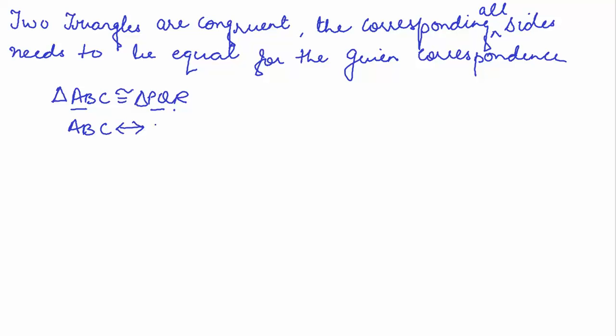And the correspondence is ABC corresponding to PQR. Now one more thing I would like to emphasize here is, when I say that triangle ABC is corresponding to triangle P or is congruent to triangle PQR, it means that it is for this correspondence, and we do not need to write it always.